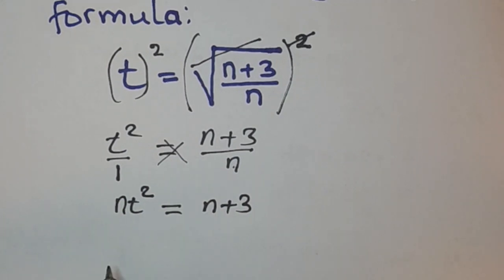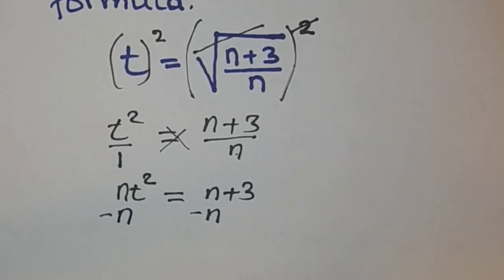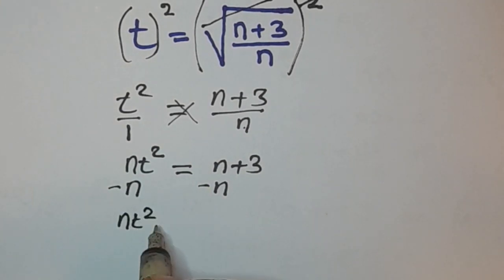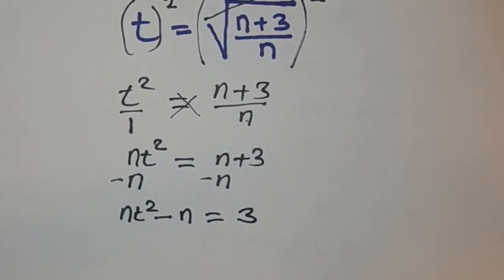Now the aim is to make n the subject, so collect like terms together. The terms that have n's, you group them together. Subtract n from both sides so that n minus n becomes zero. What you have now is nt² minus n is equal to 3.